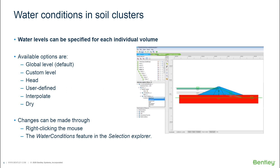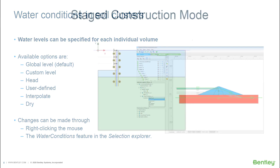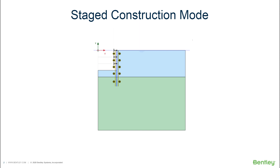You can make these assignments from the selection explorer or by right-clicking with the mouse on the area where you want to make a change. This covers part one of defining my calculation. Part two is the stage construction mode, where we can do basically anything else not related to water flow or thermal flow.